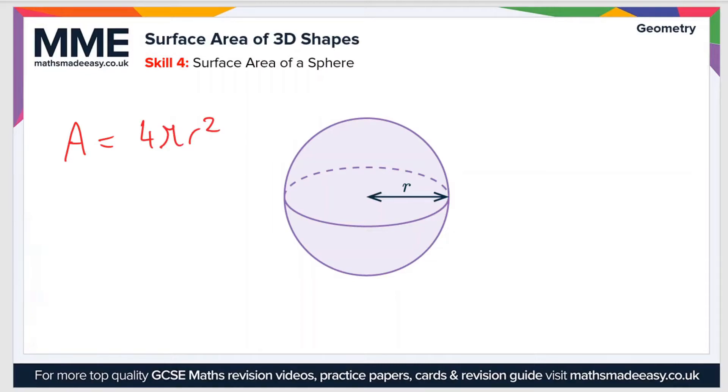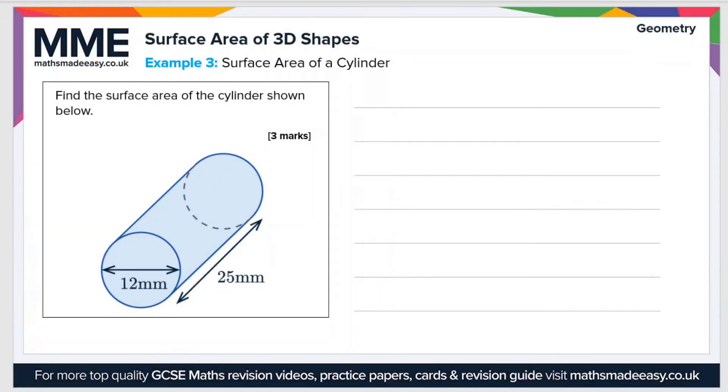Let's have a look at an example now. Find the surface area of the cylinder shown below. We've already seen the formula for the surface area of the cylinder, and that is 2πr² (that's 2 times the area of the circular face) plus 2πrh.